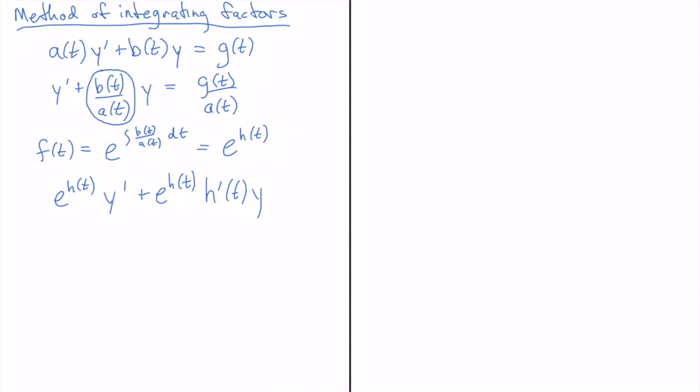And then that's multiplied by y and that will be equal to e to the h of t times g of t over a of t. So that's what we get when we multiply through by the e to the h of t.